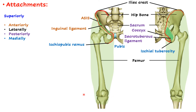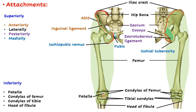Inferiorly the fascia lata is attached to all major bony prominences: along the margins of the patella, along the condyles of the femur above, condyles of the tibia below, and to the head of the fibula. This can also be seen from the posterior aspect. Inferiorly it is straightforward — it attaches to all major bony prominences.